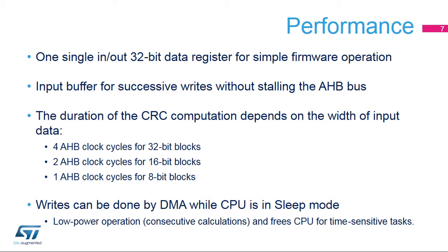The duration of the computation depends on the data width: 4 AHB clock cycles for 32-bit blocks, 2 AHB clock cycles for 16-bit blocks, and 1 AHB clock cycle for 8-bit blocks. The DMA controller can be used for writing to the CRC engine, which offloads the CPU for other tasks and can be used for back-to-back calculations for verifying code or data integrity.